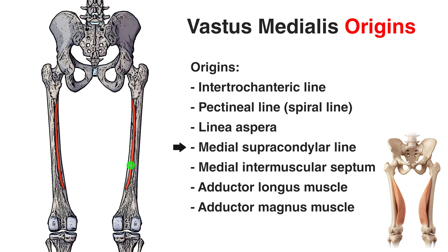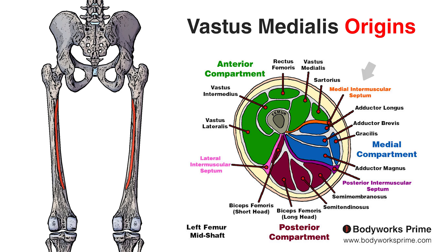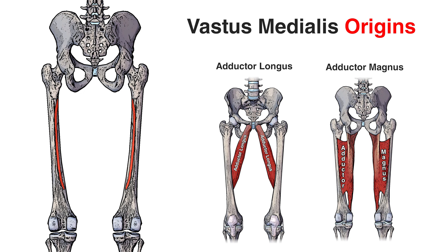As it runs down the linea aspera it then splits onto the medial supracondylar line — the linea aspera splits into two ridges, one going lateral (the lateral supracondylar line) and one going medial (the medial supracondylar line). The next origin point is the medial intermuscular septum, a deep fascia layer separating the medial and anterior compartments of the thigh, serving as another origin for the vastus medialis. The last two origin points are the adductor longus and adductor magnus muscles, both part of the adductor group in the medial compartment of the thigh.